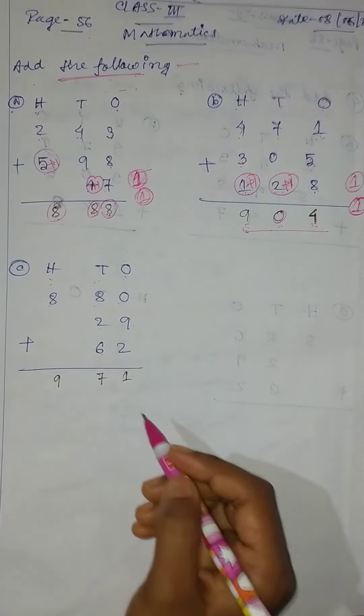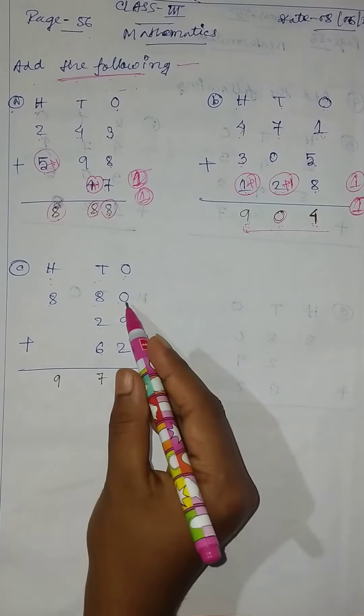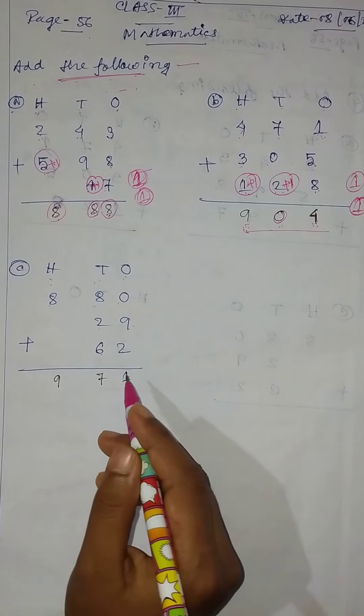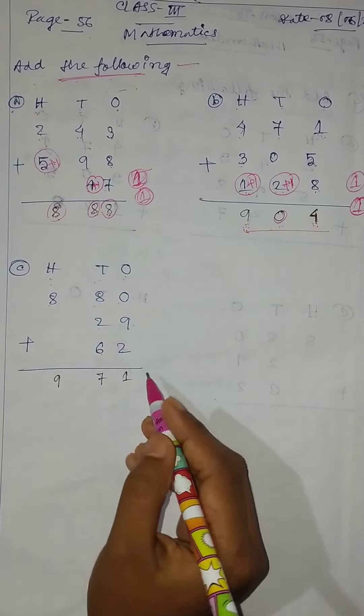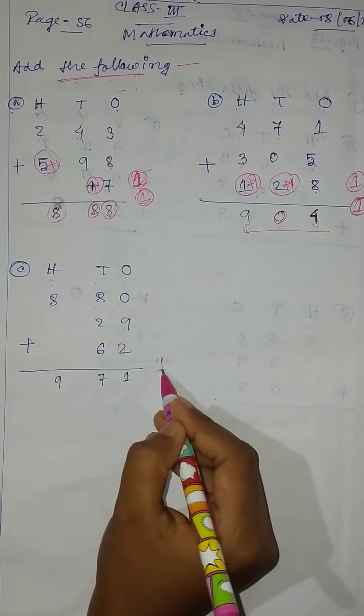Firstly, 9 plus 2: 9, 10, 11. 11 plus 0 equals 11, write 1 and 1 carry.